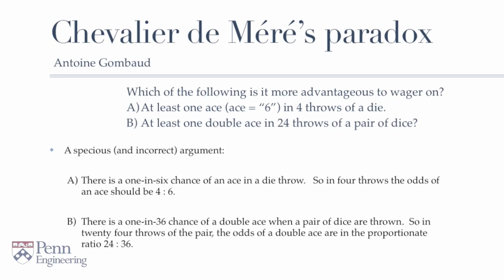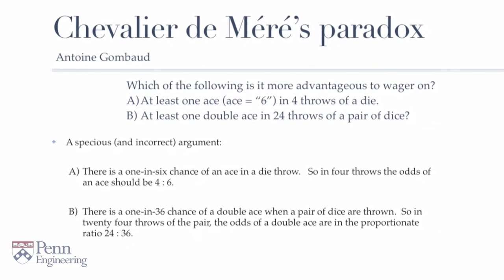If one applies this logic to throws of a pair of dice, then when one throws a pair of dice, the chance of observing a double ace, well, there are 36 possibilities for the pair of dice. So, to get a double ace, there's a one in 36 chance of seeing a double ace. And therefore, if one throws a pair of dice 24 times, the chance of observing a double ace should then be 24 in 36. Well, both of these cases result in two-thirds. And therefore, a naive argument might say, well, there's an equal chance of observing either a single ace in four throws of one die, or a double ace in 24 throws of a pair of dice.